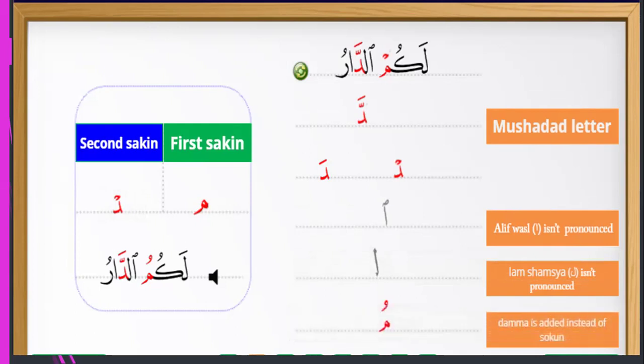Dhamma is added in the state of sukun. Meem gets dhamma: it becomes 'lakumum.' With nukla kun: 'lakumud dar.'